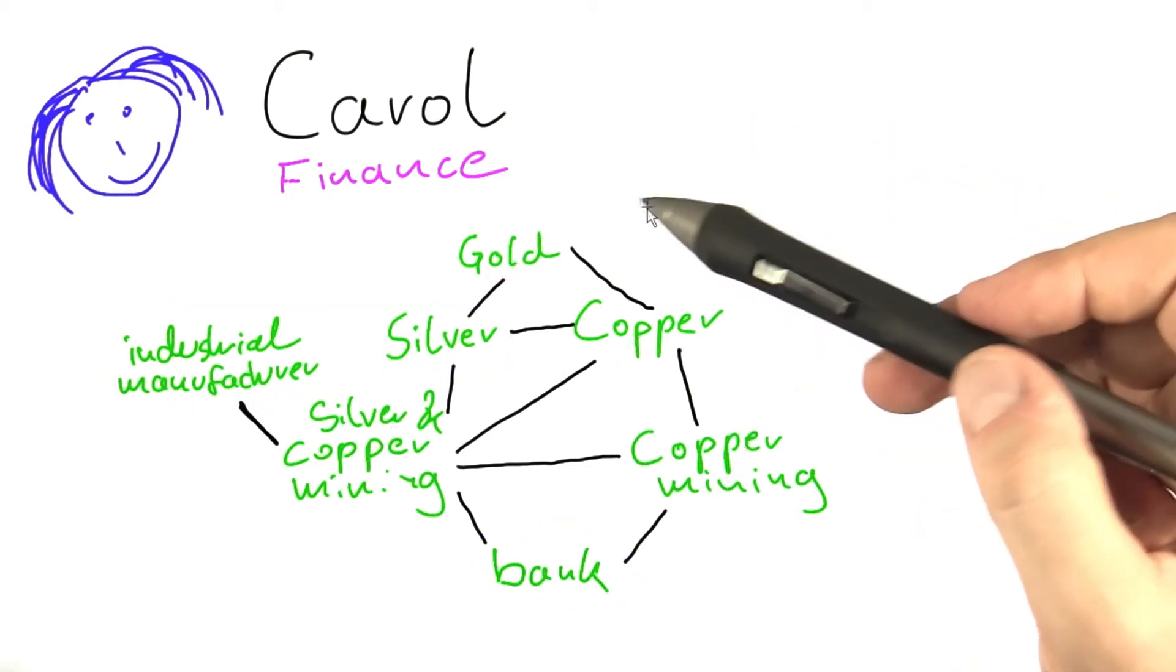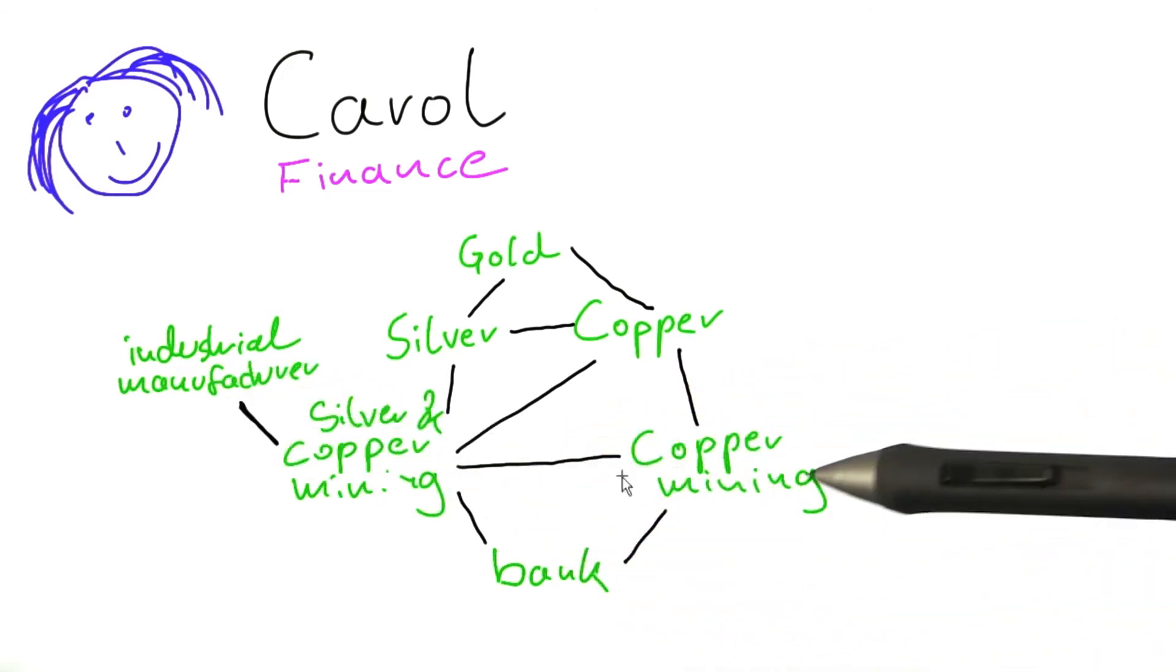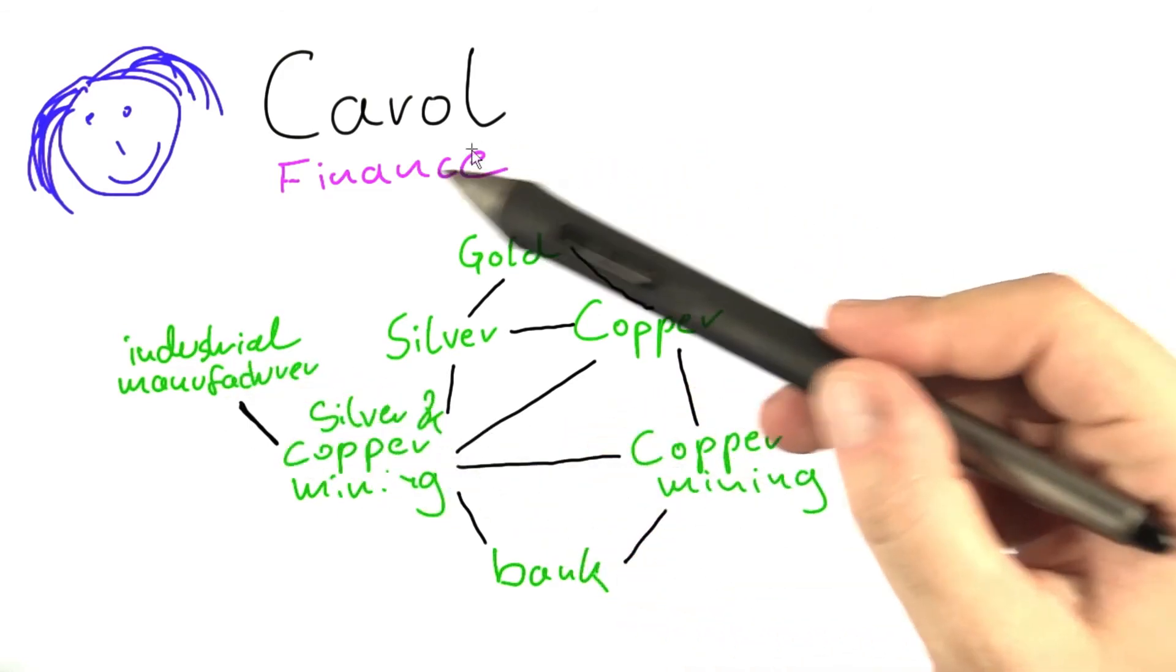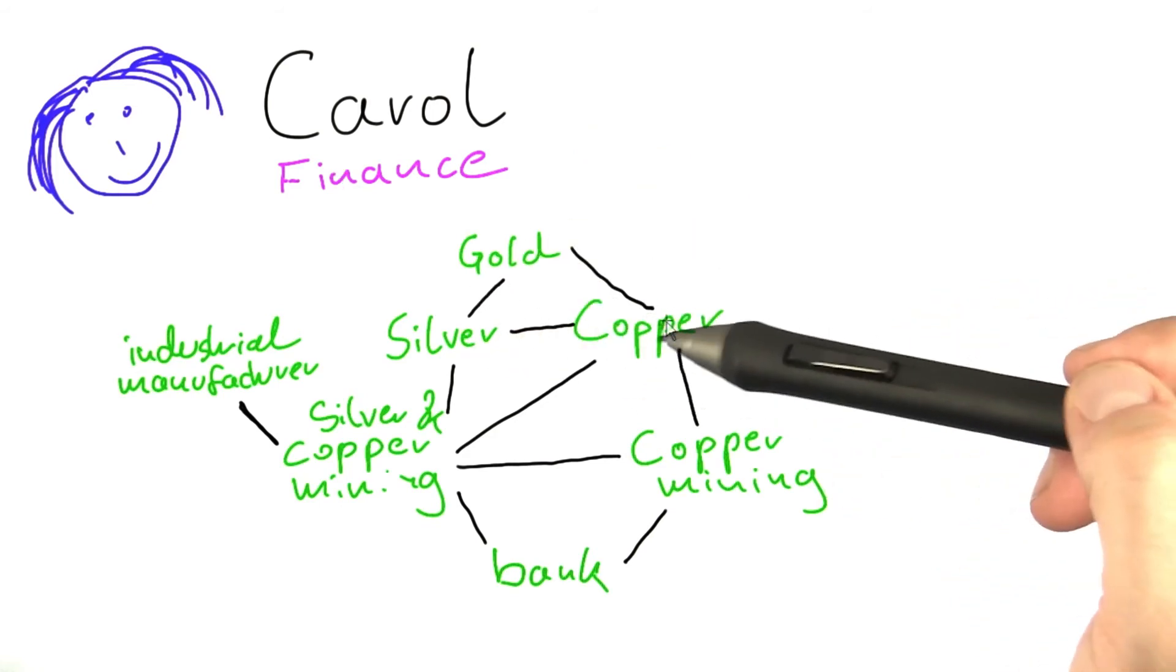So, similar to the problem that Bob was working on, this is, of course, a bit of a simplification. When you're working on real-world finance problems, you usually have constraints that are a bit more complicated.